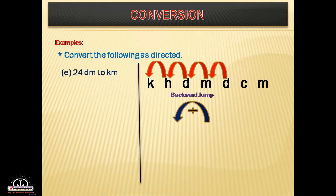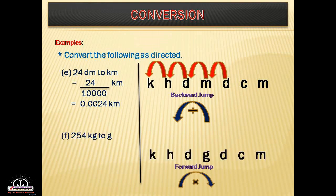Next example: 24 decimeters to kilometers. Decimeter to kilometer is lower unit to higher unit — a backward jump. There are four places, so divide by 10,000. The answer is 0.0024 kilometers.